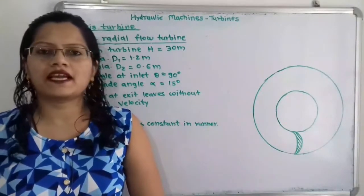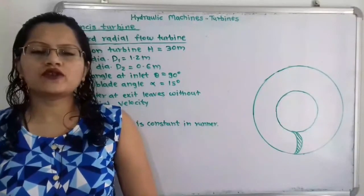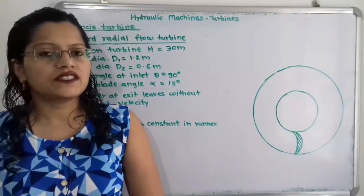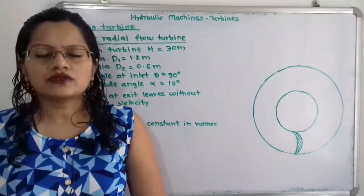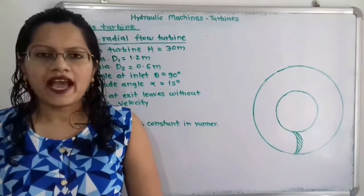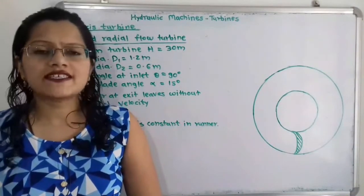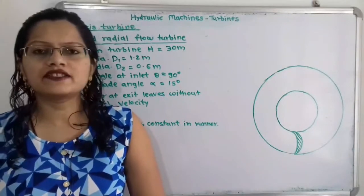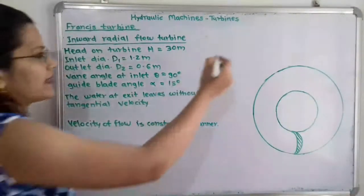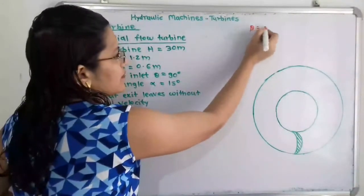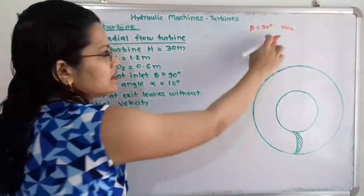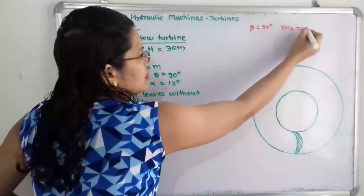Hello friends, this is Priyanka. Today we are going to solve a problem on Francis turbine. Francis turbine is the inward radial flow reaction turbine. When the discharge at outlet is radial, this turbine is known as Francis turbine. So in Francis turbine, angle beta is equal to 90 degrees and velocity of whirl at outlet, Vw2, is equal to zero.